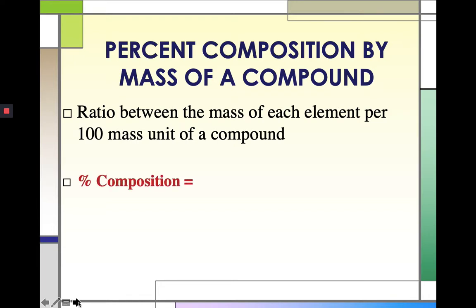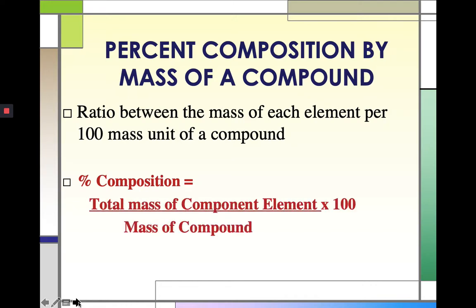In equation form, percent composition is equal to the total mass of the component element divided by the mass of the compound, times 100. For example, given NaCl, we can determine how many percent of the compound is sodium and how many percent by mass is chlorine.